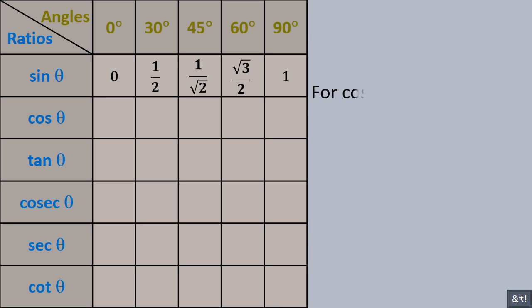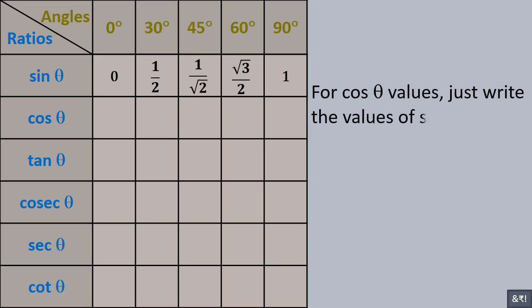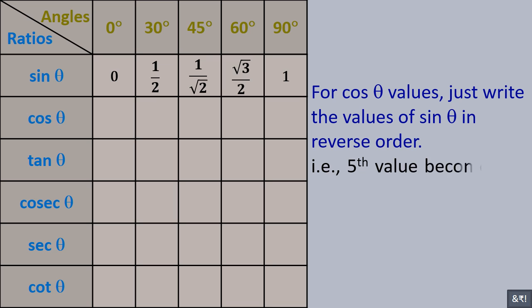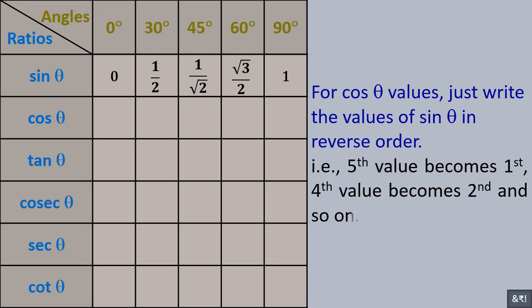For cos theta values, just write the values of sine theta in reverse order. That is, the fifth value becomes the first, the fourth value becomes the second, and so on.